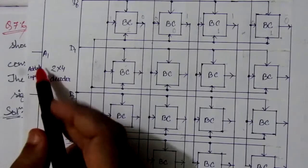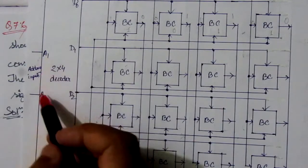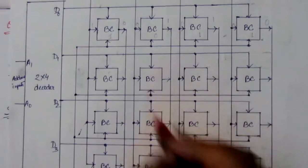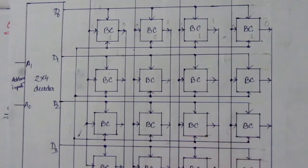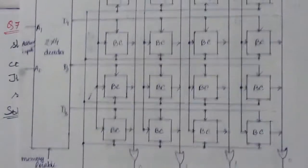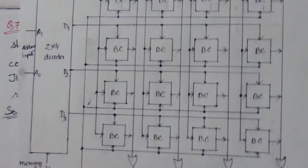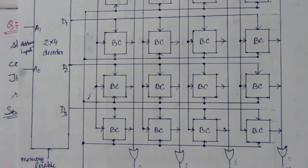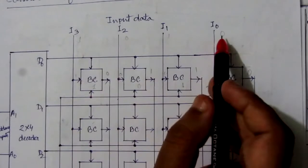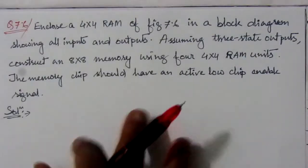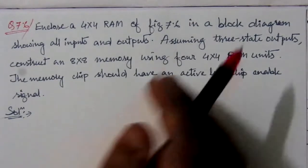There are two address input lines A1 and A0, one memory enable input line, and one read or write bar signal. The operation of the circuit will be read or write depending on this read/write bar signal. So we have two address lines, one enable input, one read/write input, and four-bit input and output data lines.